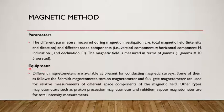Next one is equipment. Different magnetometers are available at present for conducting magnetic surveys. Some of them as follows: Schmidt magnetometer, torsion magnetometer, and fluxgate magnetometer are commonly used for relative measurements of different space components of the magnetic field. Other types of magnetometers such as proton precession magnetometer and rubidium vapor magnetometer are used for total intensity measurements.